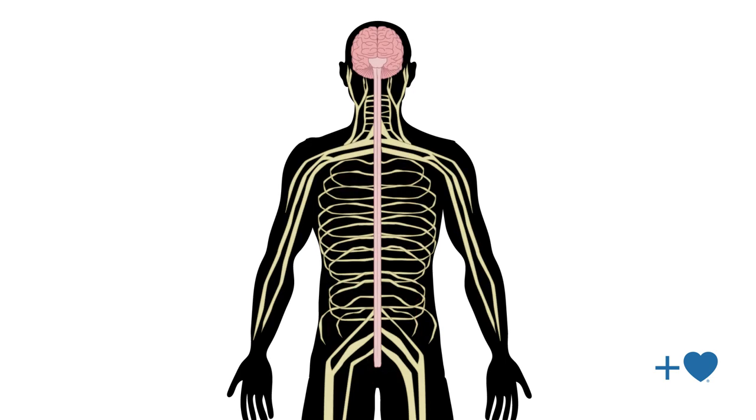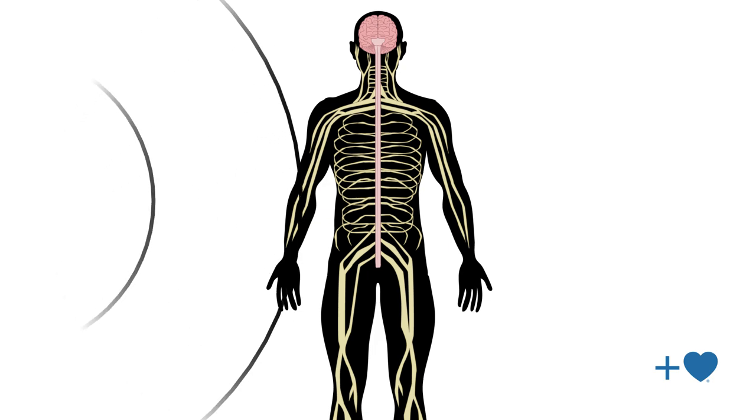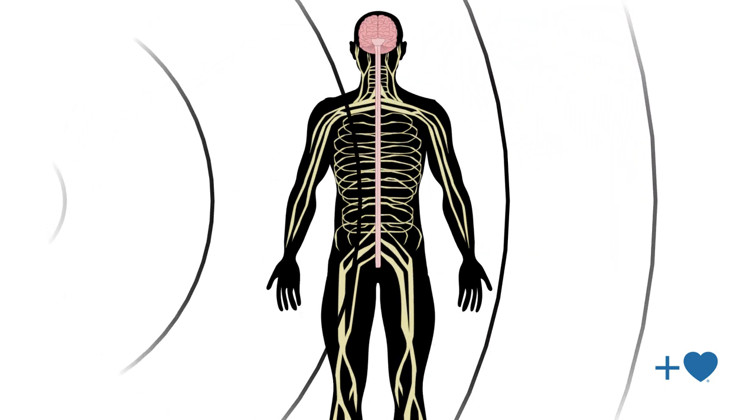Their findings suggest that our nervous systems are well attuned to the energetic fluctuations that ripple through our solar system.